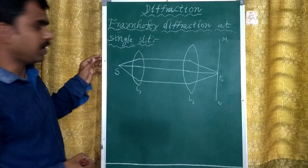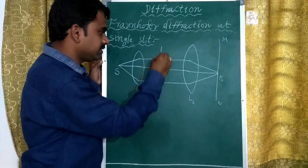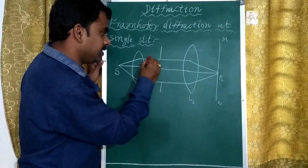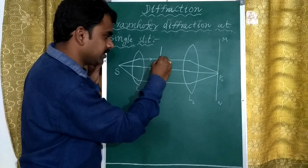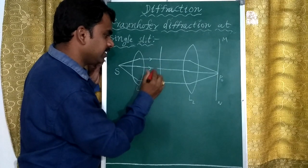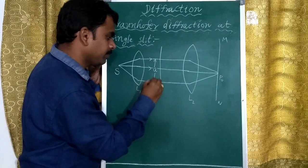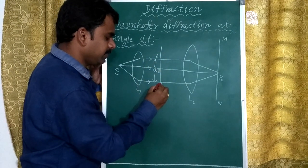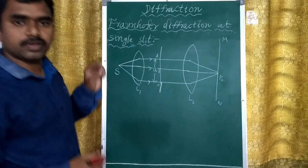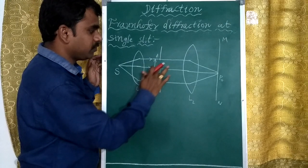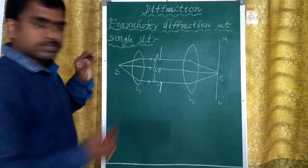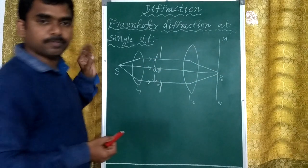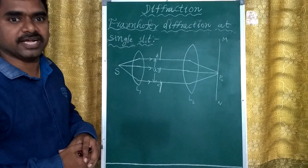Now we place a slit between the lenses. The total width of the slit is called A, with ends labeled A and C and midpoint B. For the untouched portion of light that passes directly through, it reaches the screen at position P0, where we get maximum intensity.